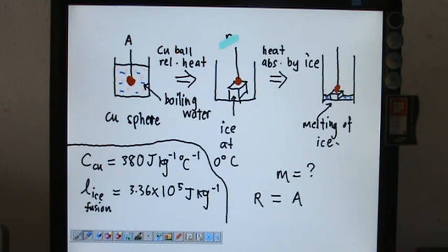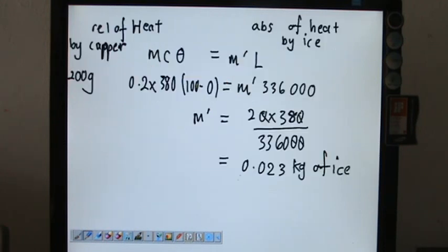You see here. The one that I am turning, the third diagram. So the calculation is like this. Release of heat by the copper ball, 100 Celsius to 0 Celsius, is the total heat absorbed by the ice to melt. ML.